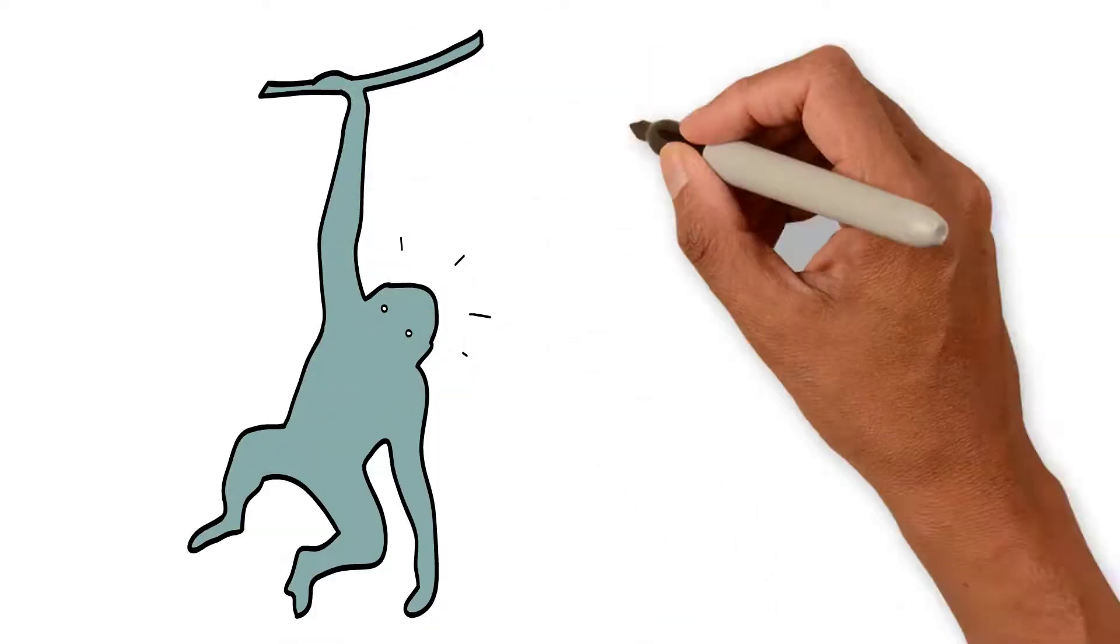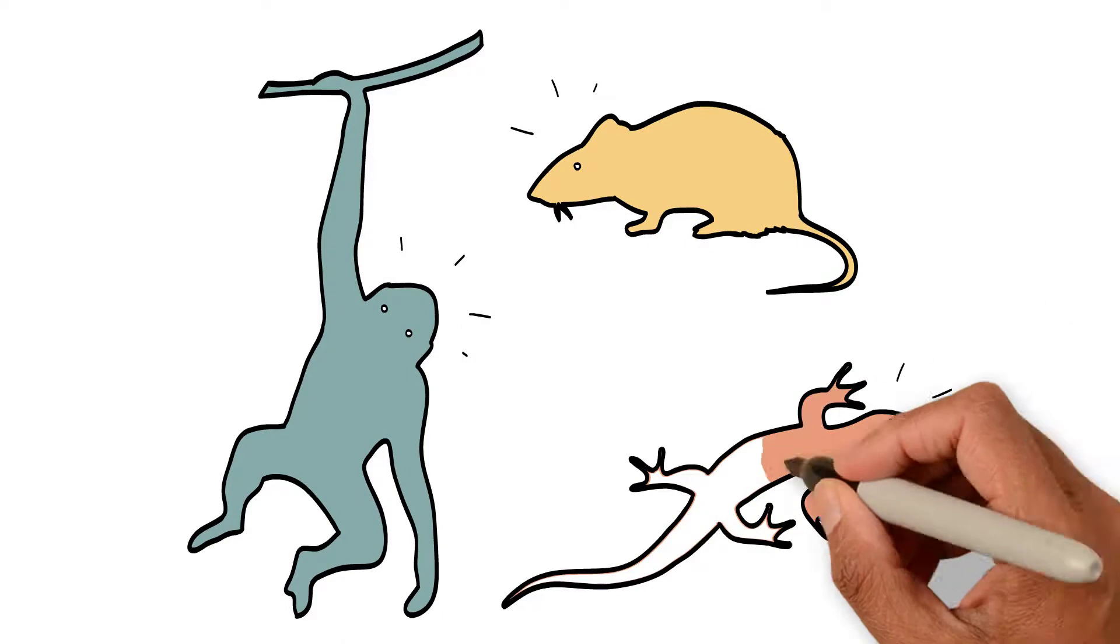We're going to meet the monkey, mouse and lizard that make up the three parts of your brain.